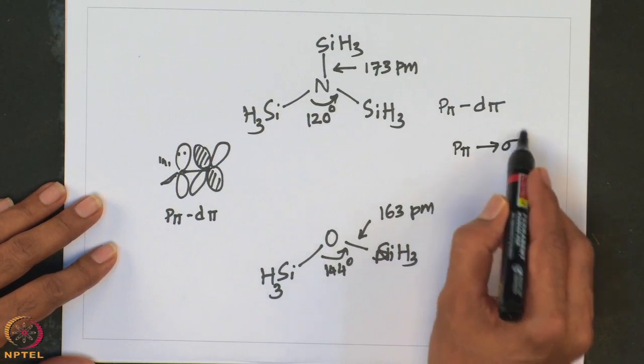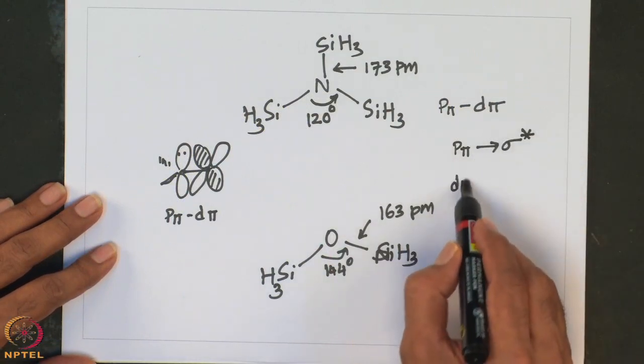The correct explanation is that the lone pair of nitrogen is essentially donated to the empty sigma star (σ*) of SiH3. This is very similar to what we encounter in carbon monoxide or phosphine metal complexes. In metal carbonyls, the metal t2g electrons are given to the pi star of CO through back bonding, whereas in phosphines, t2g electrons are promoted to the sigma star of PR3. Essentially, this electron transfer is analogous to p-pi to sigma star or d-pi to sigma star interaction.